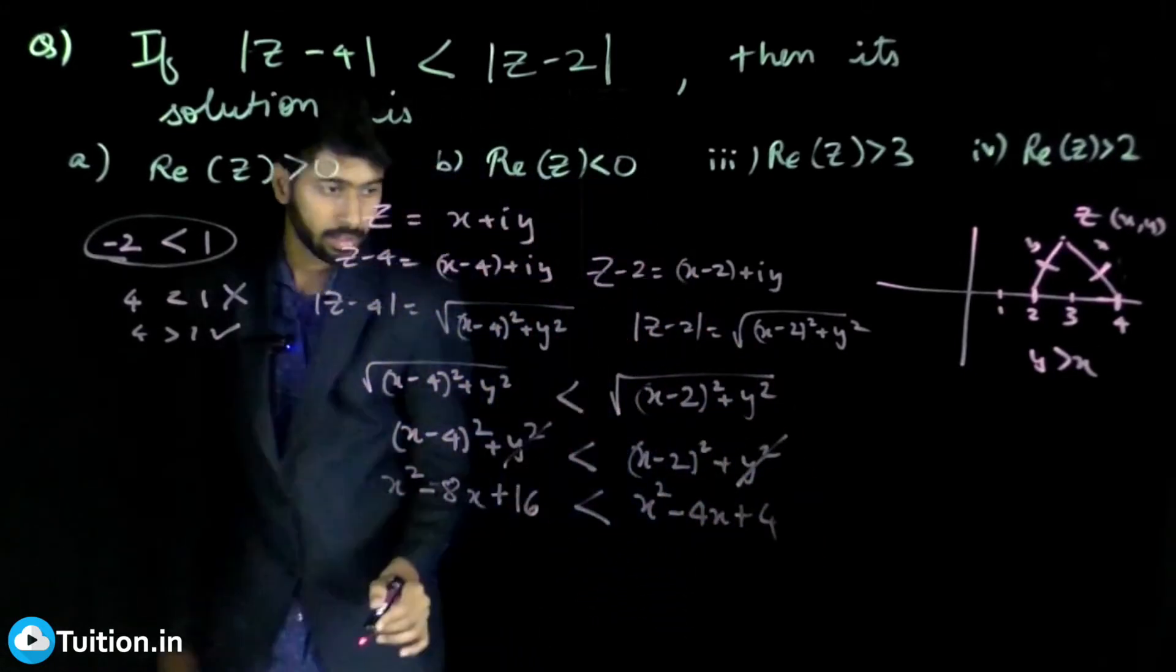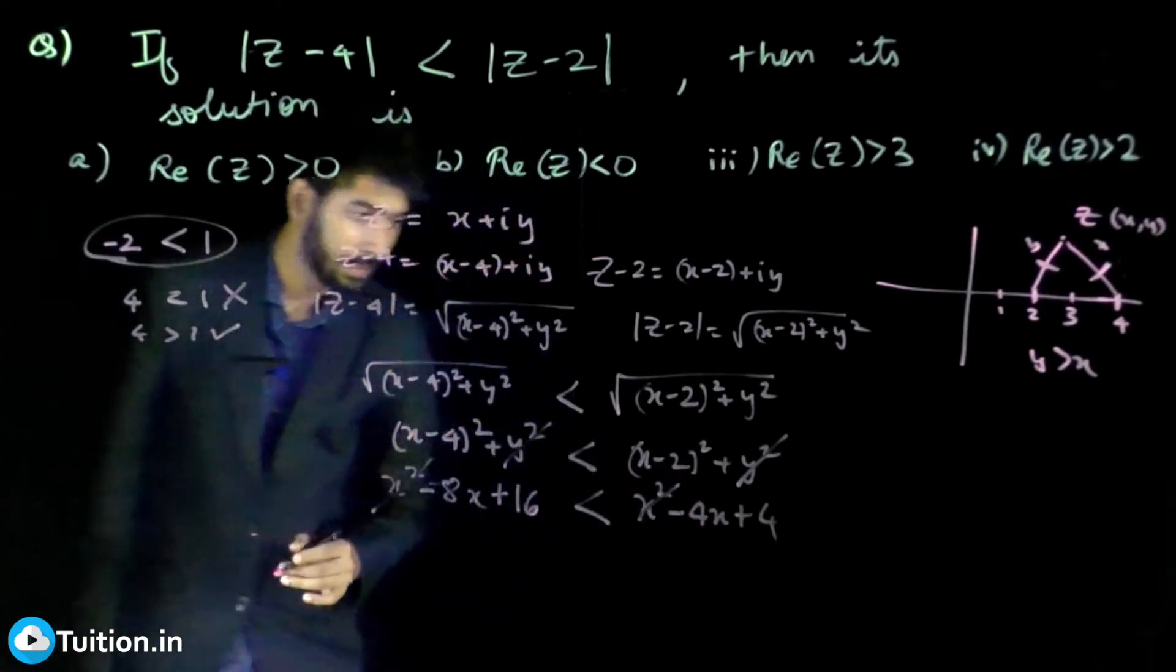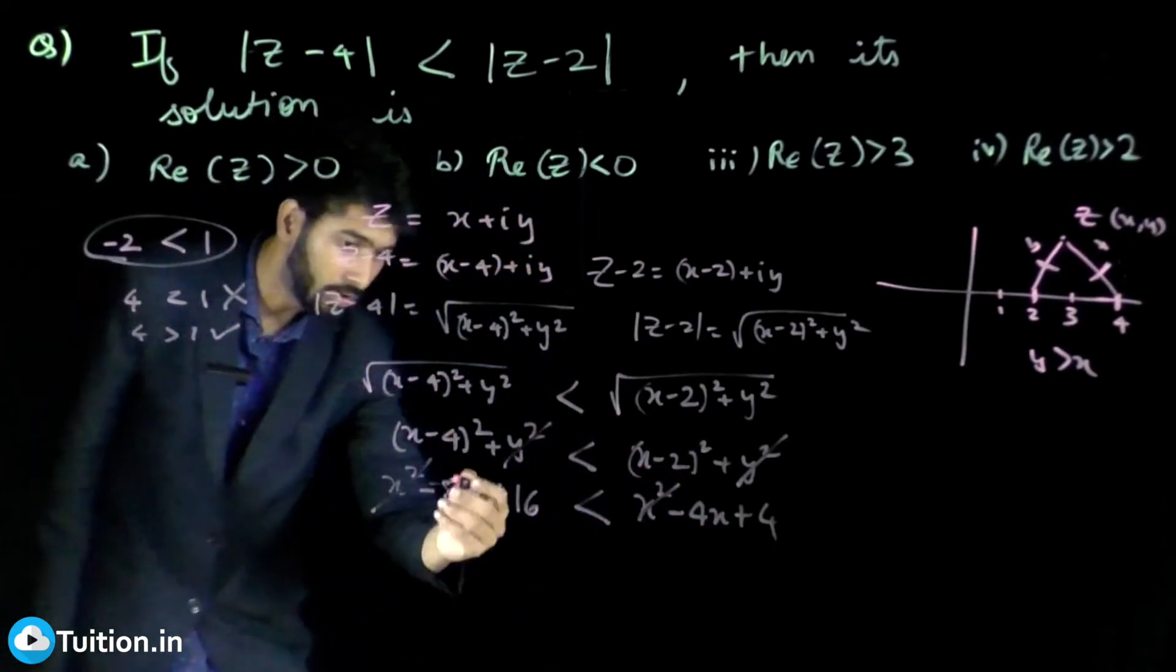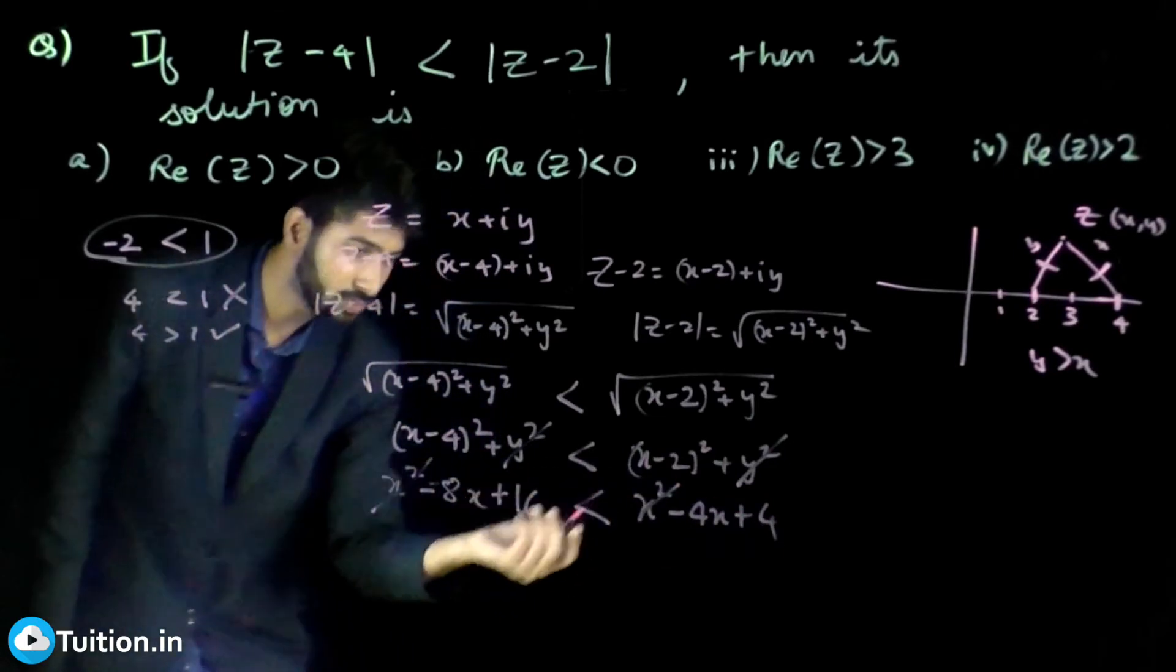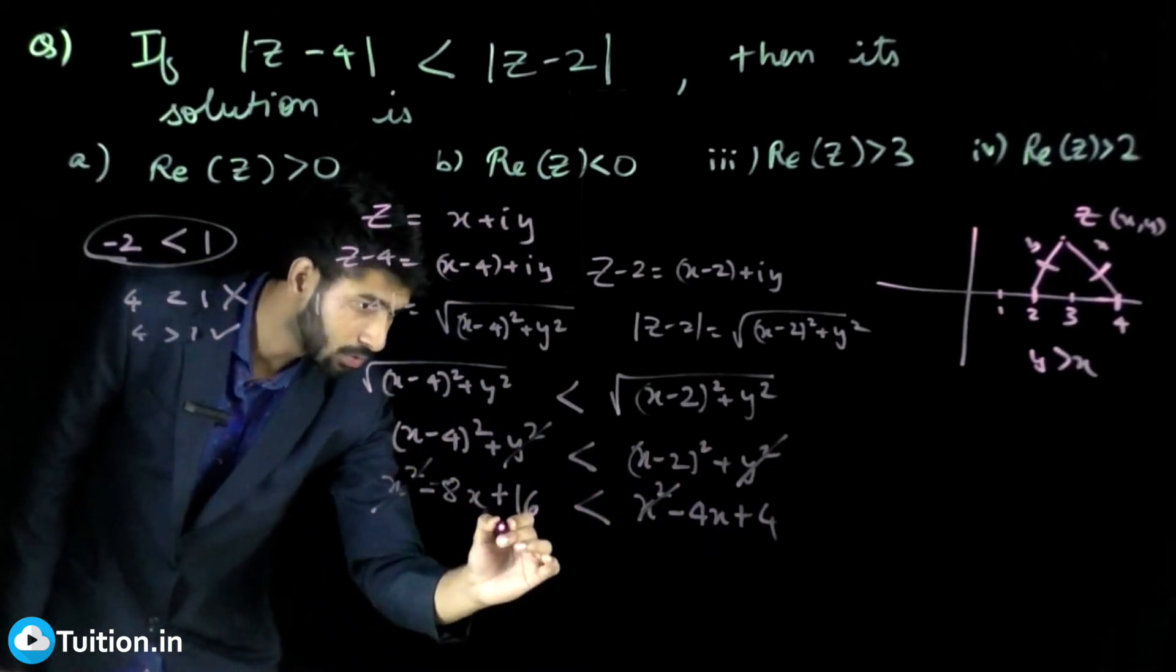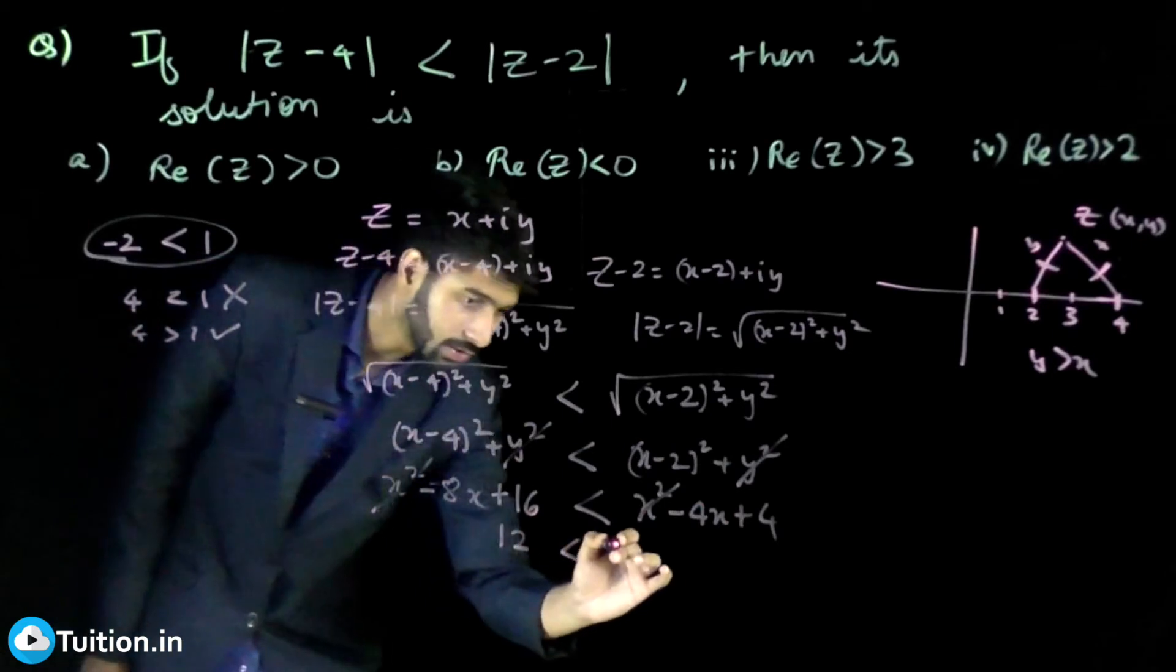X² goes away. You can take 2X outside and bring this 4 here. You have 16 - 4 which is 12 is greater than 8X - 4X which is 4X. So X should be greater than 3.